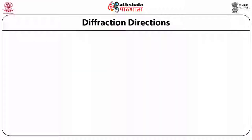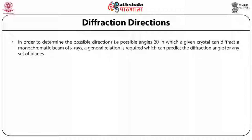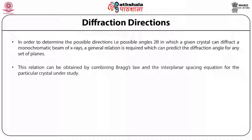Diffraction directions. In order to determine the possible directions, that is possible angles 2-theta, in which a given crystal can diffract a monochromatic beam of X-rays, a general relation is required which can predict the diffraction angle for any set of planes. This relation can be obtained by combining Bragg's law and the interplanar spacing equation for the particular crystal under study. For example, consider a cubic crystal.